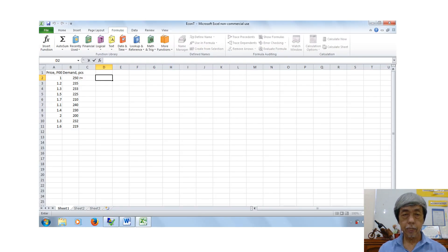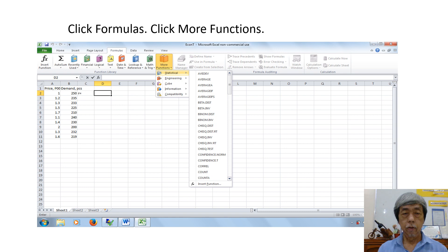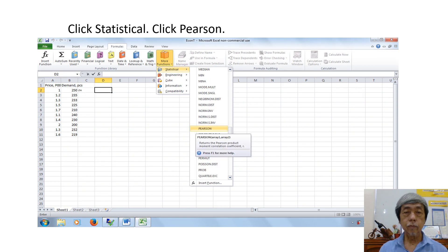This is the Excel sheet showing the data, the price versus the demand for sugar. To use the Excel program, click formulas, click more functions, click statistical, click Pearson.